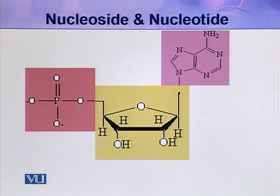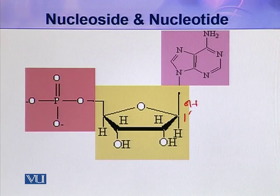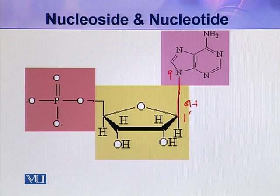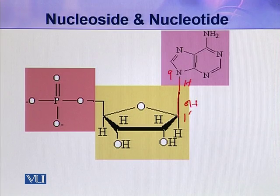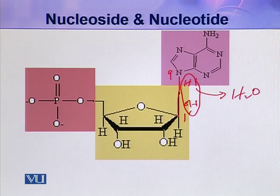Now let us see how these three components are joined together. As you can see here, at the one prime carbon an OH group is present. The nitrogen of the nitrogenous base — nitrogen number nine — attaches with this one prime carbon of the pentose sugar. The hydrogen of the nitrogenous base and the hydroxyl of the pentose sugar combine, and with the elimination of a water molecule, the pentose sugar and nitrogenous base are attached.